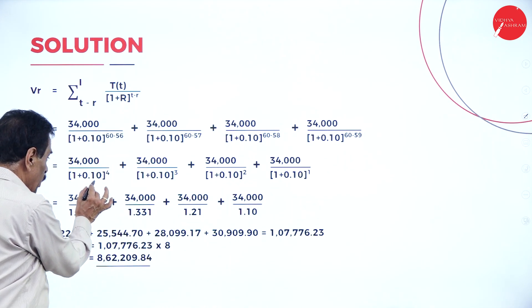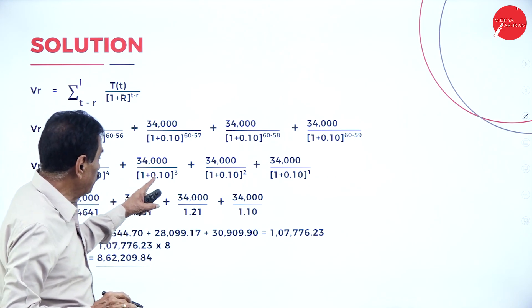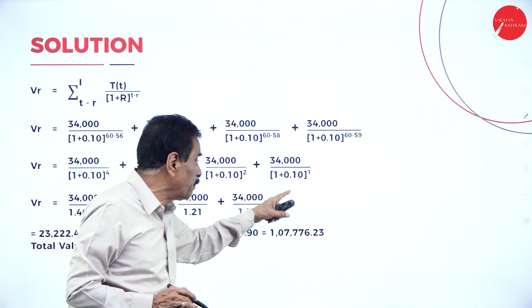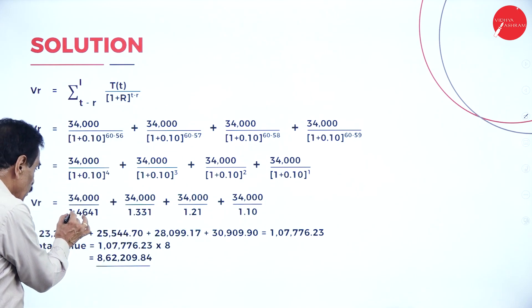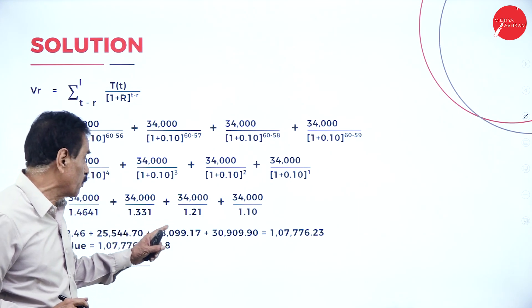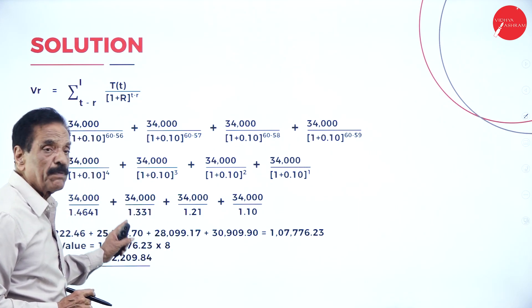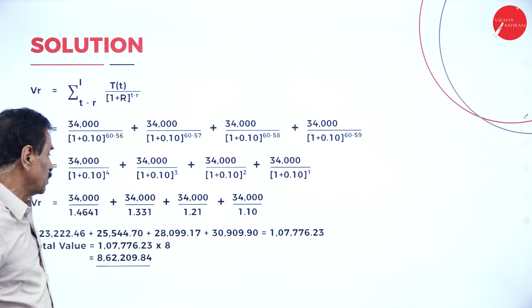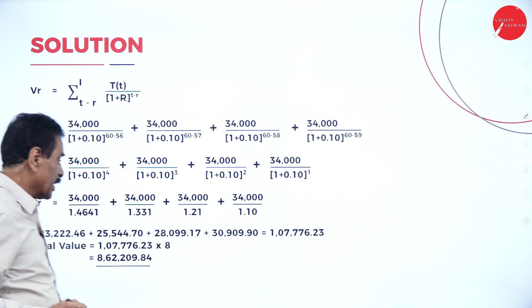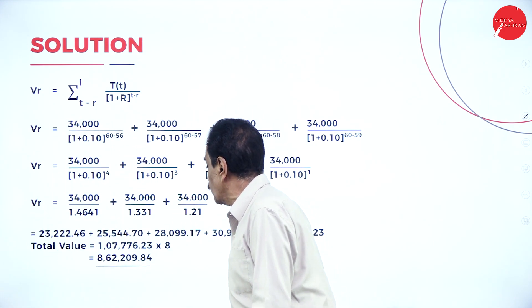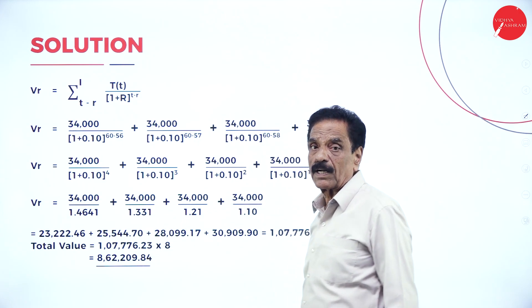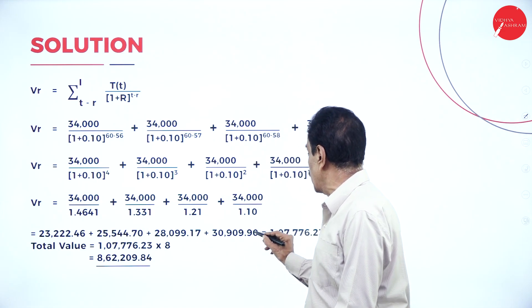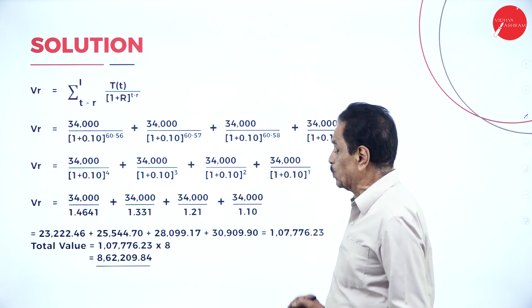Calculating each term: 34,000 / 1.10^4 = 34,000 / 1.4641 = 23,222.46; 34,000 / 1.10^3 = 34,000 / 1.331 = 25,544.70; 34,000 / 1.10^2 = 34,000 / 1.21 = 28,099; 34,000 / 1.10^1 = 34,000 / 1.10 = 30,909. The total value comes to 1,07,776.23.